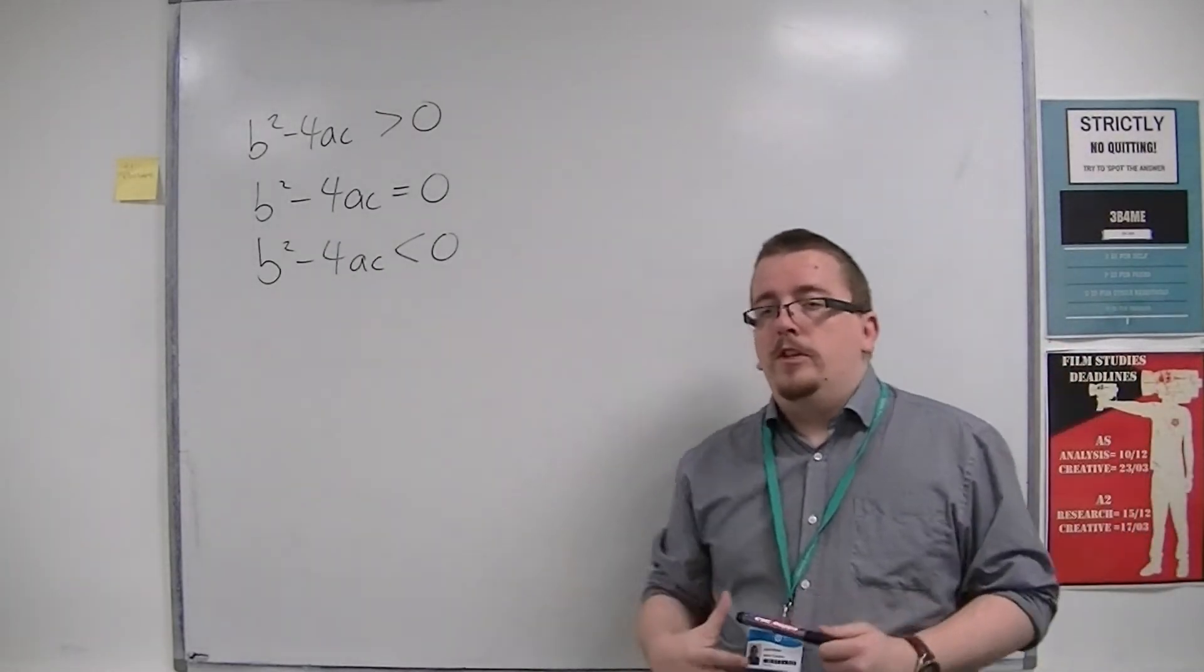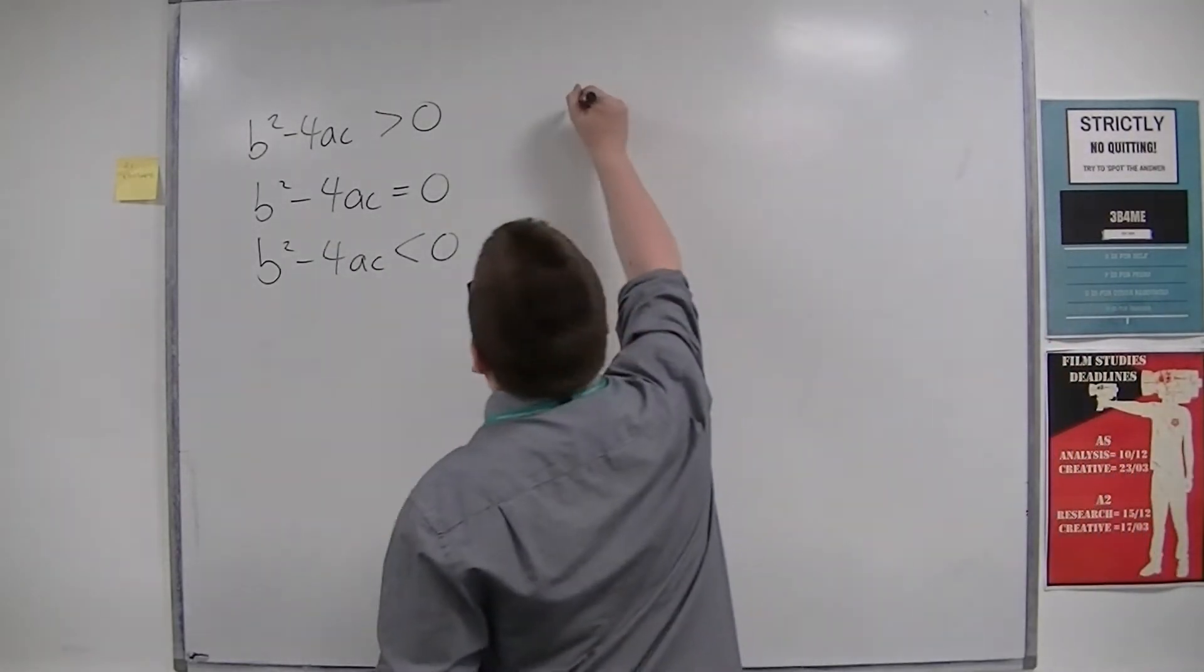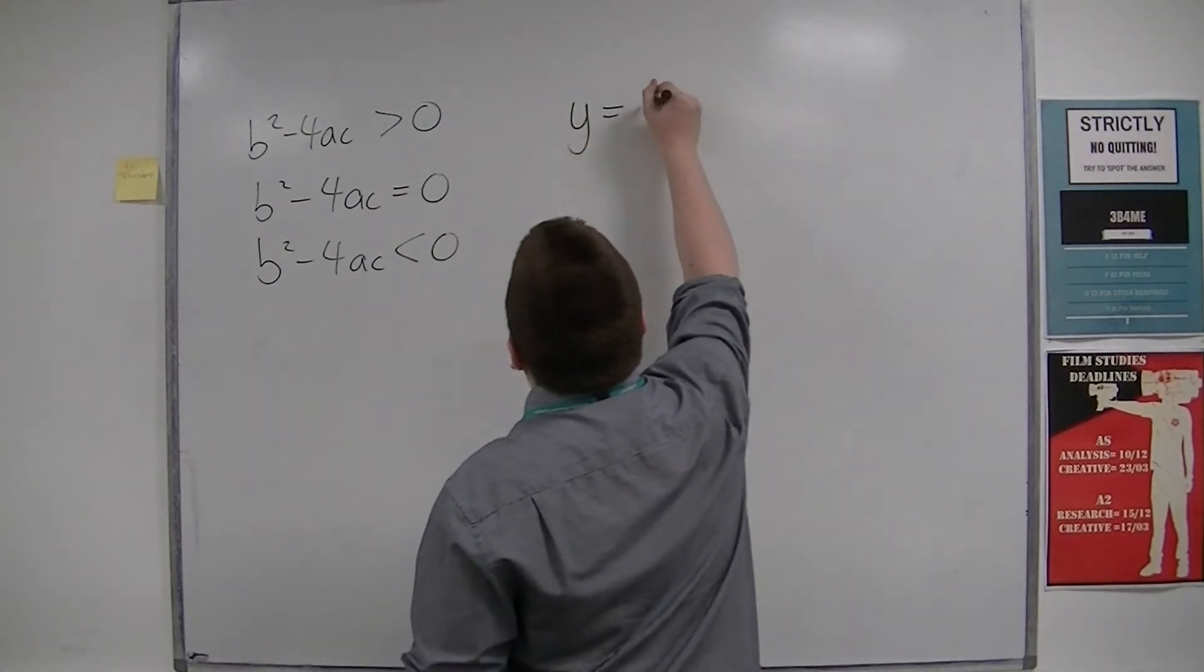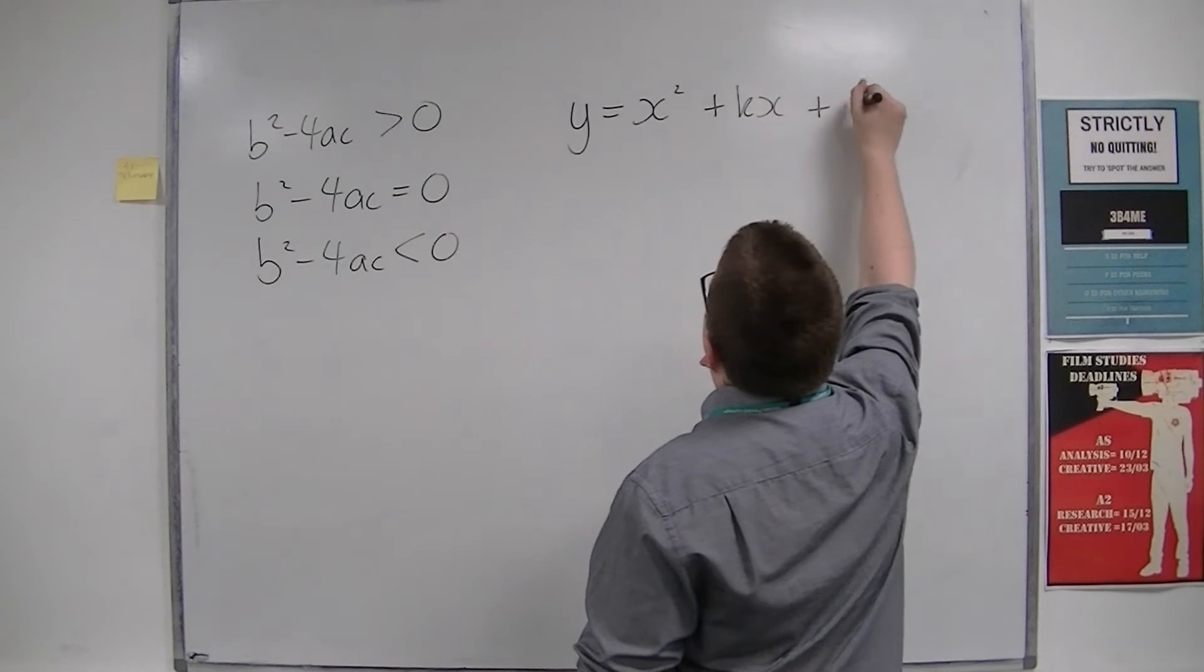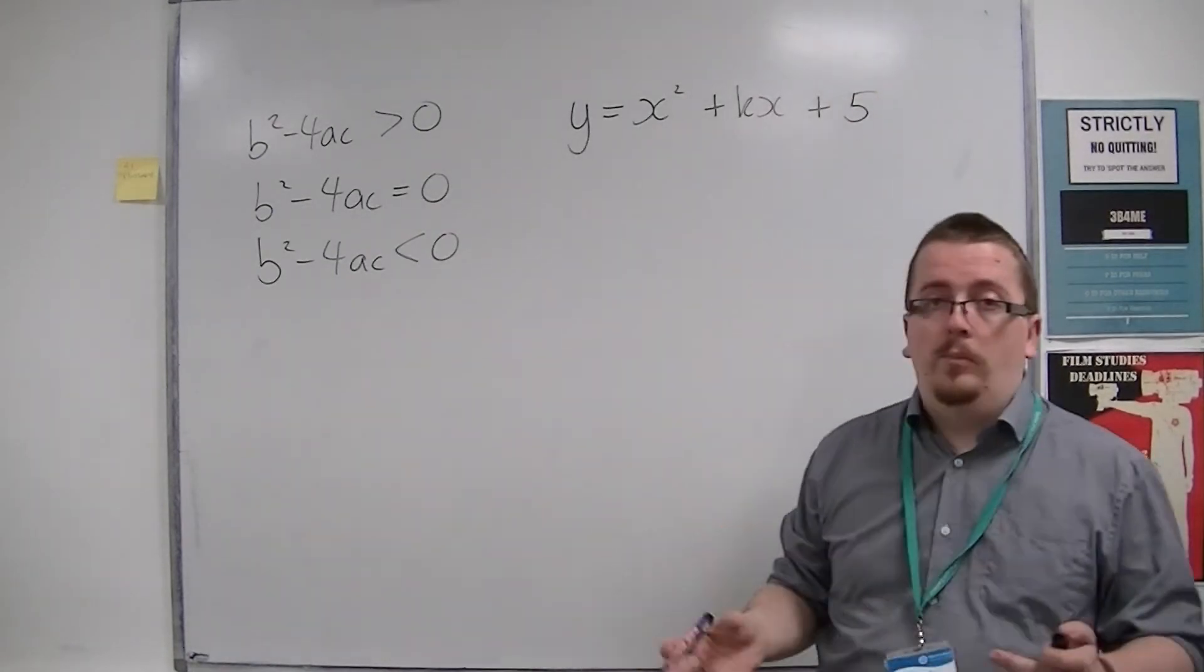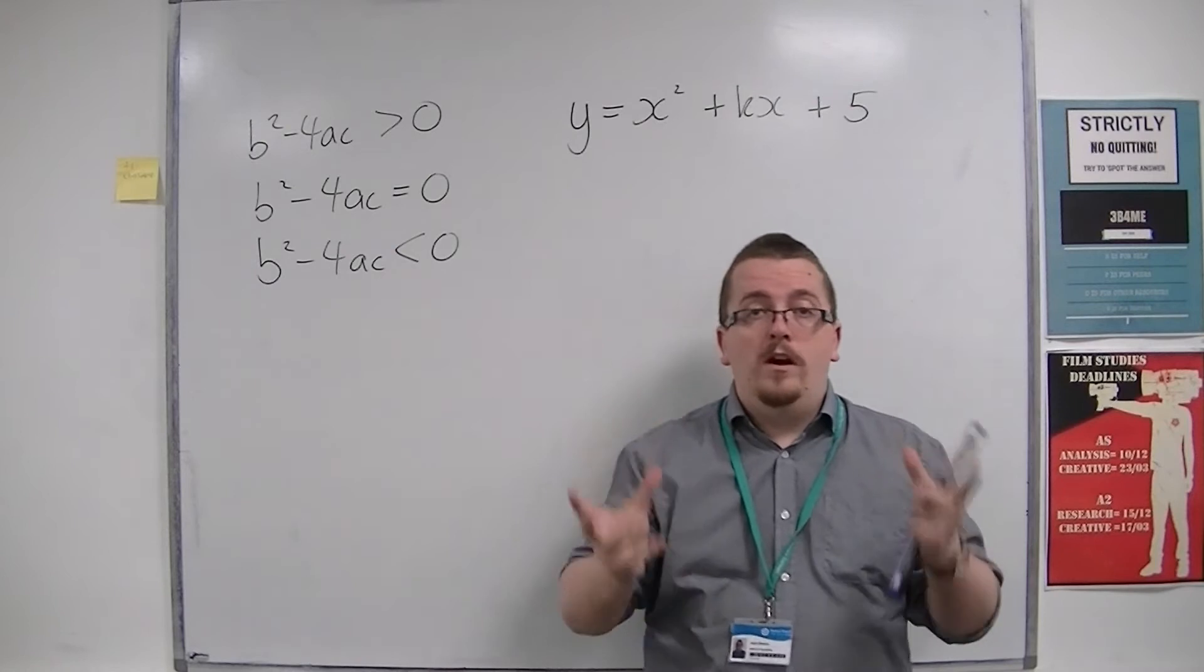To set up a problem, you could look at a curve. Y is equal to x squared plus kx plus 5, for example, where k is a number that we don't know.